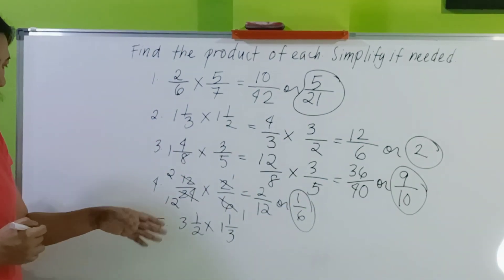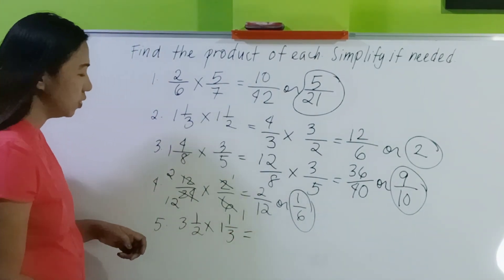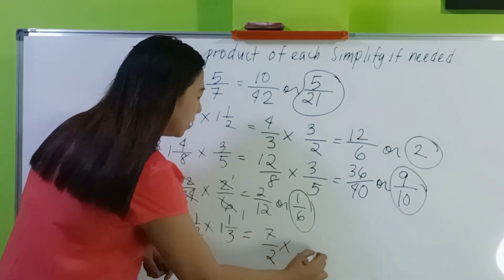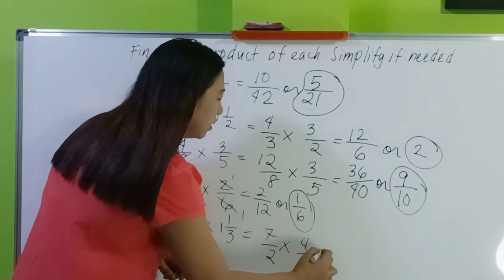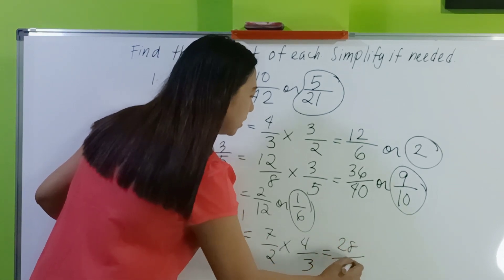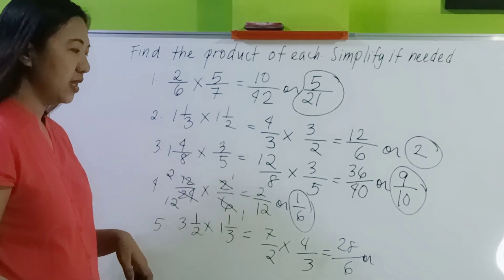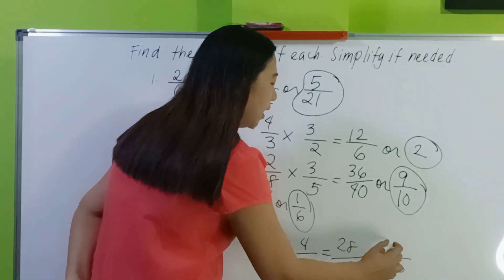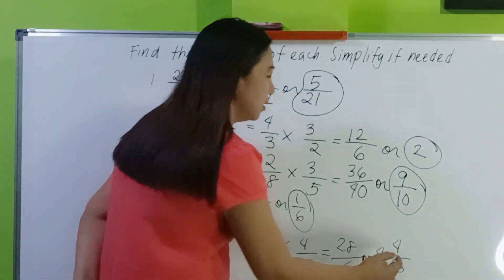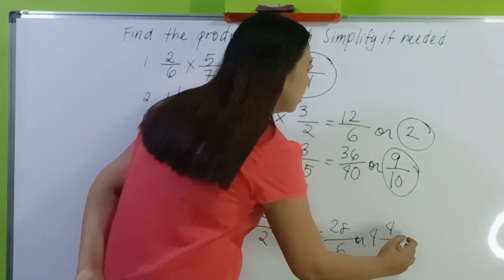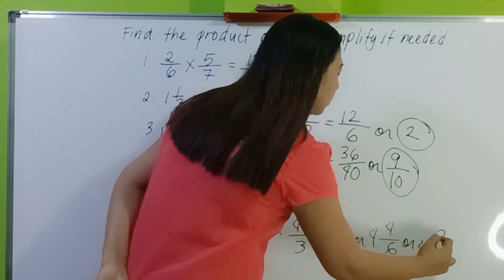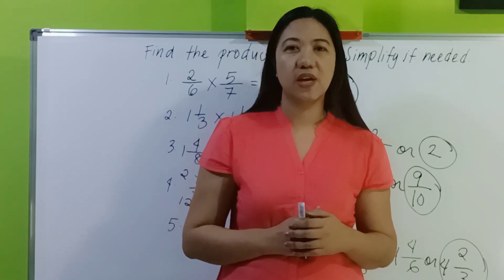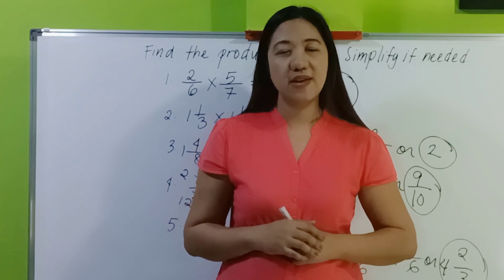Number 4: 3 and 1/2 times 1 and 1/3 — both are mixed numbers, so change both to improper fractions. Copy the denominator 2: 2 times 3 is 6, plus 1 is 7. Copy the denominator 3: 3 times 1 is 3, plus 1 is 4. Multiply: 7 times 4 is 28, over 6. Change to a mixed number: 28 divided by 6 is 4 with a remainder of 4. Simplify 4/6: 4 divided by 2 is 2, 6 divided by 2 is 3. Final answer: 4 and 2/3. That's it for today — please subscribe, hit the notification bell, goodbye, God bless and keep safe!